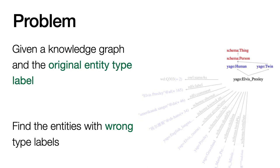So the problem we would like to solve is, given a knowledge graph where entities may have some potentially noisy type labels, we'd like to find those entities that have wrong type labels.